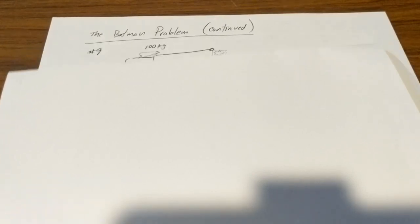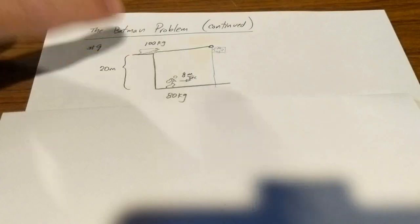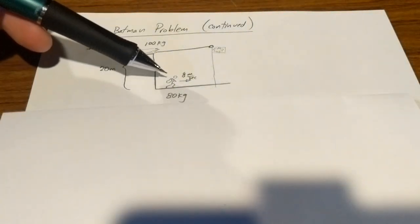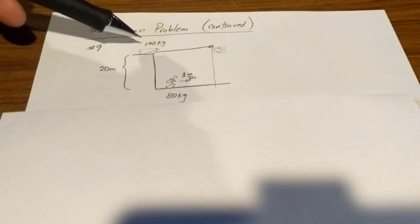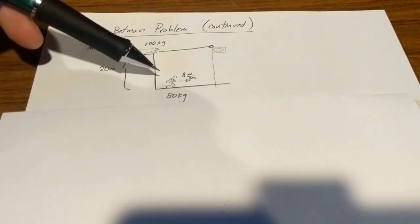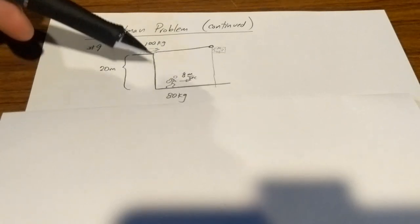First I want to remind you about the conservation of energy portion of that problem. So here is that situation. We had Batman up on the roof about to swing down and capture the crook. Batman is going to swing down from rest from a height of 20 meters and the crook is running out of the building at 8 meters per second, and here are their masses.